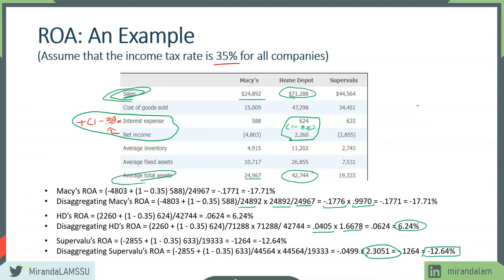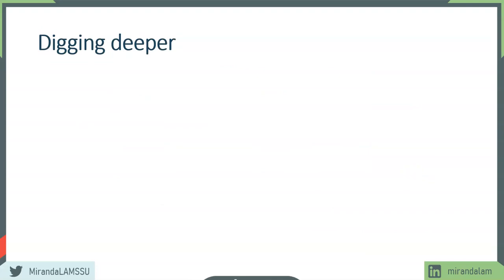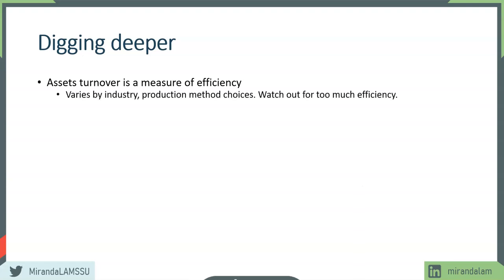In this example, we saw that just by decomposing ROA into its two components — profit margin and asset turnover — we get more information. Asset turnover has many types and is a very useful tool for measuring the efficiency of a company. The standards obviously vary by industry, because there are different ways to conduct business depending on the industry you're in.